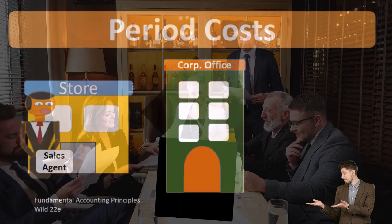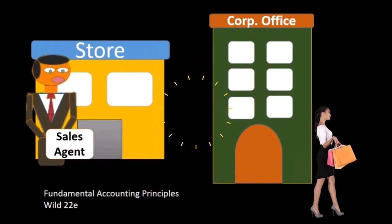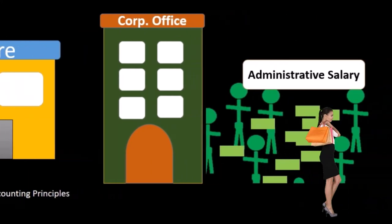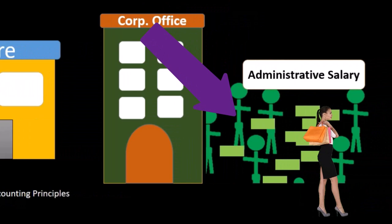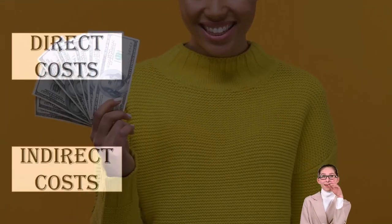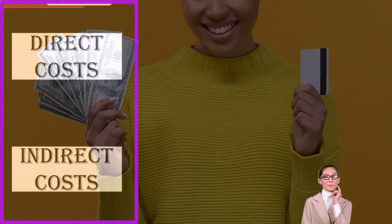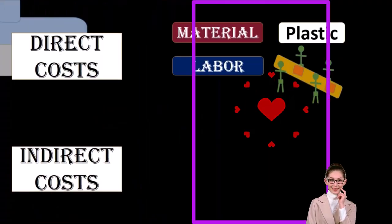Corporate office period costs include the depreciation, the salaries of the people working in the corporate office, which are usually going to be the administrative salaries. We can compare and contrast that to the costs that are directly related to the inventory — direct costs and indirect costs — things like the materials, things like the labor.